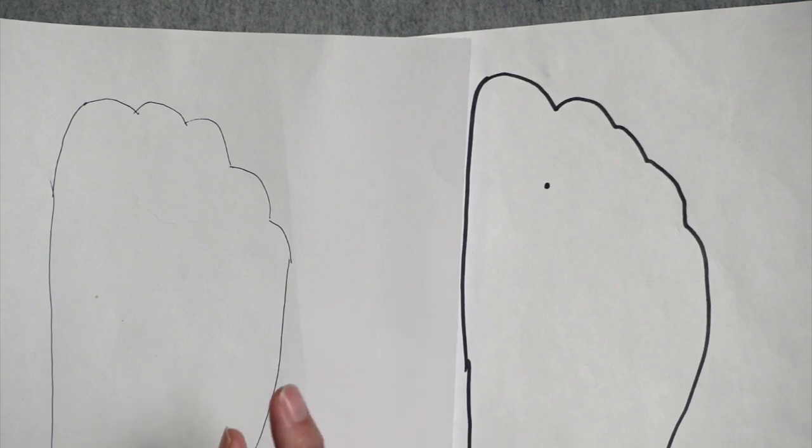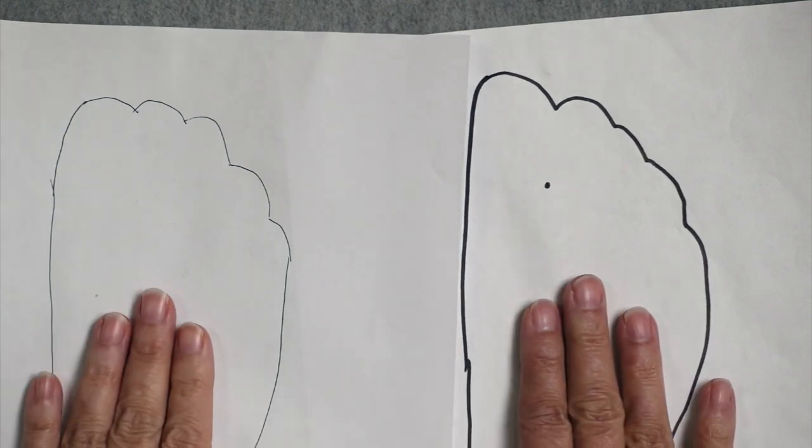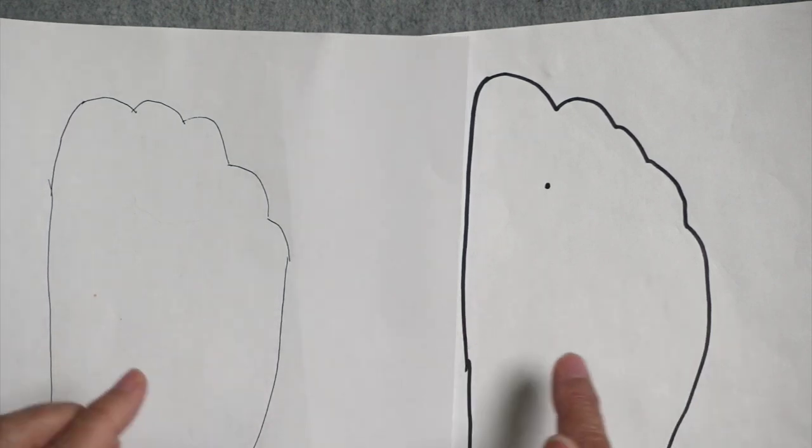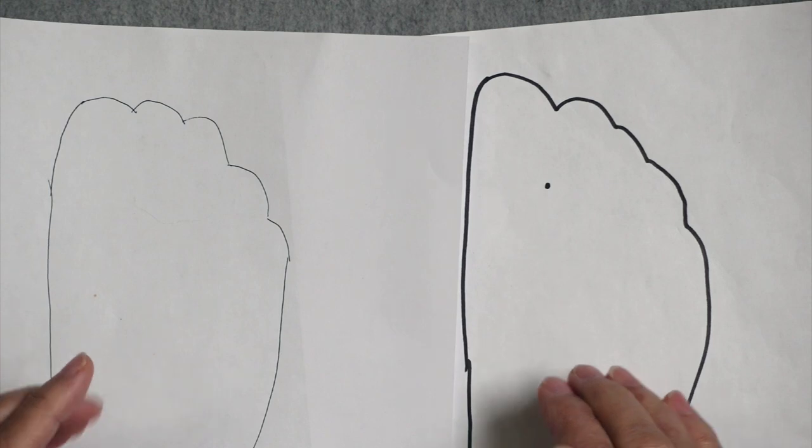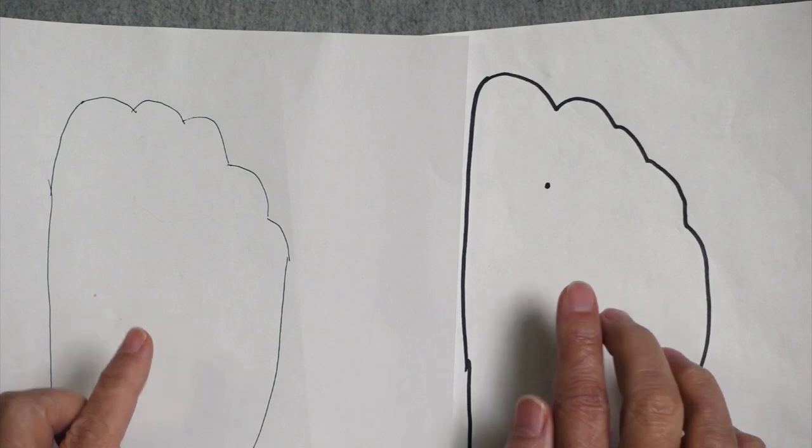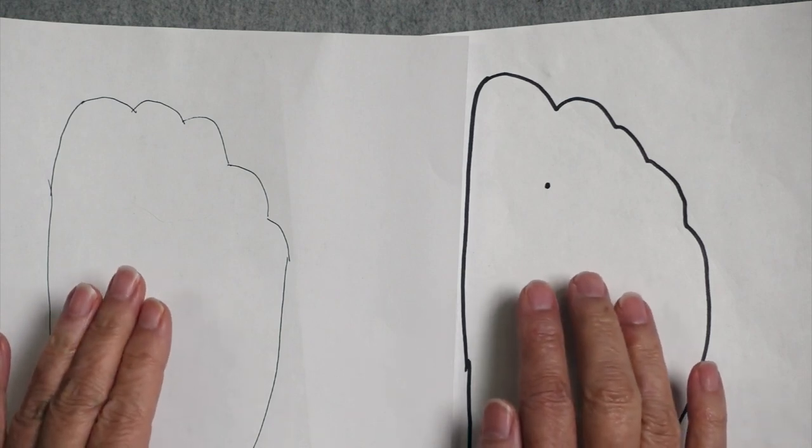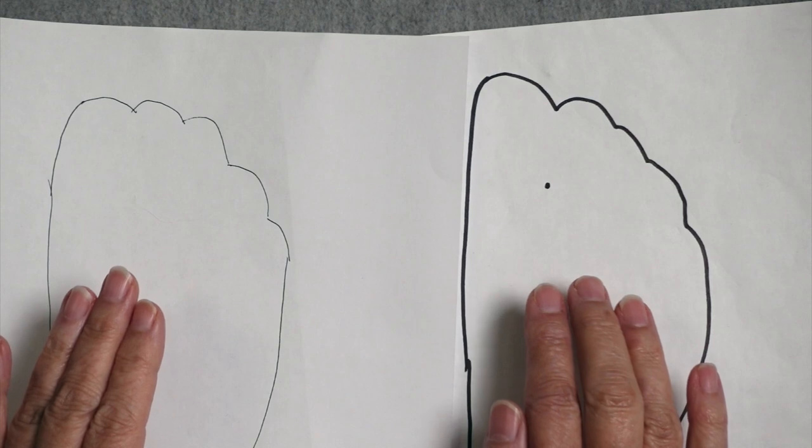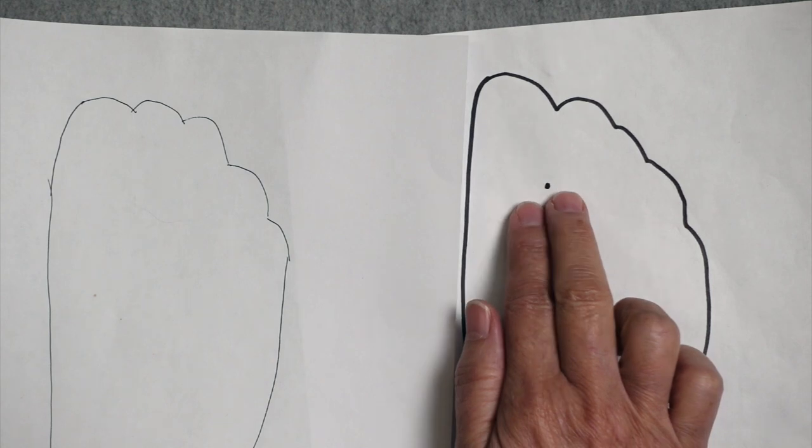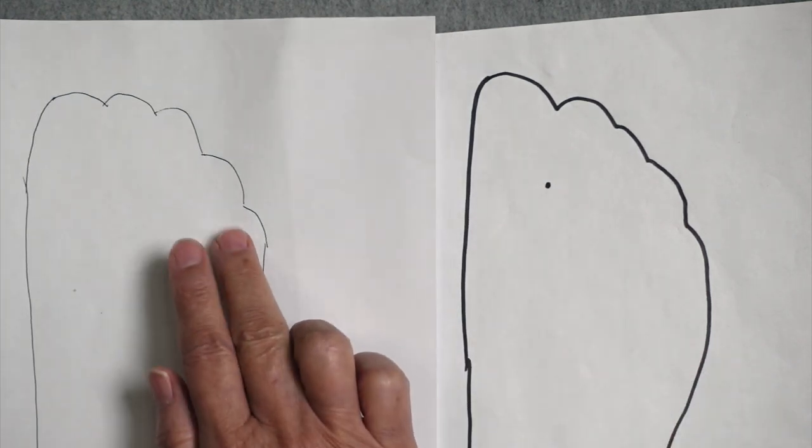The second approach that you can use for when to start a sock toe would be based on the actual shape of the sock recipient's foot. So I have two friends here who have identical measurements in terms of the ball of their feet. So if I were knitting socks for them, and I have, I would have the same number of stitches in the socks. And if I use the instructions for the toe that I was just talking about, and it was two inches long, it would be too short for Helen, and it would be too long for Rosemary.